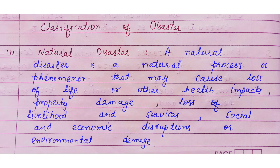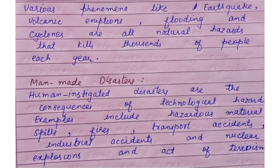Classification of Disasters: First is Natural Disaster. A natural disaster is a natural process or phenomenon that may cause loss of life or other health impacts, property damage, loss of livelihood and services, social and economic disruption, or environmental damage — occurring naturally, such as an earthquake.